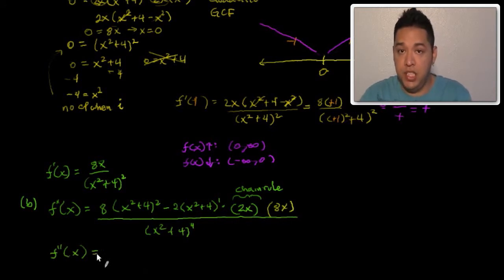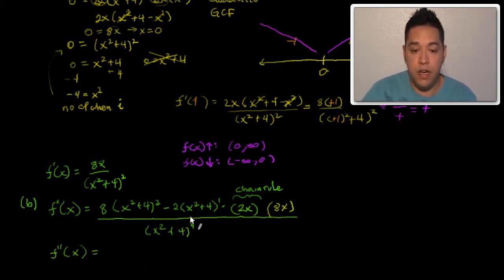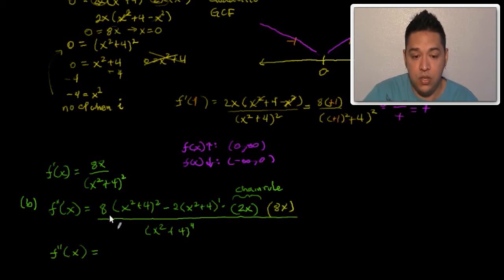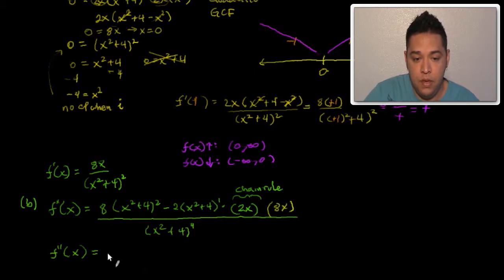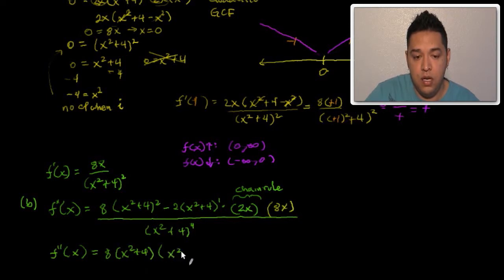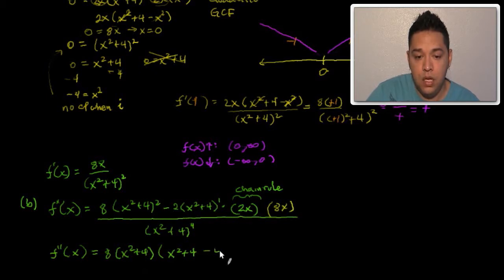Just like we simplified the first derivative, let's try to simplify the second derivative by taking out the GCF — the greatest common factor. Both terms share an 8 and an (x² + 4). This term has two of them and the other has one, so we can only factor out one (x² + 4). That leaves the first term with just (x² + 4) and the second term reduces to negative 4x².